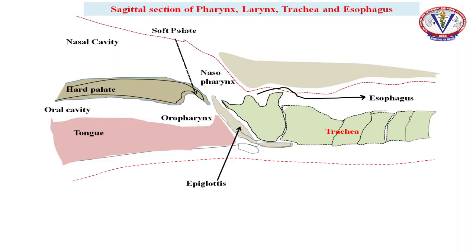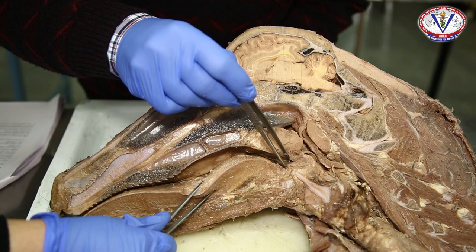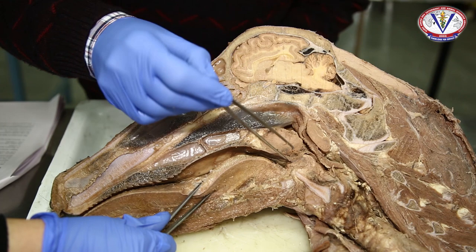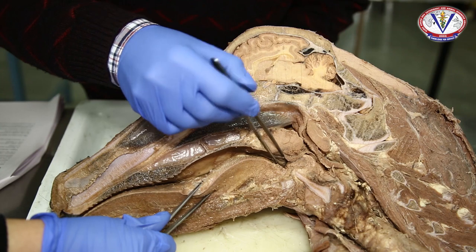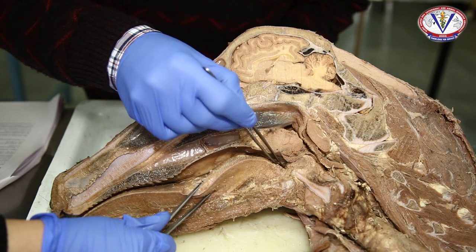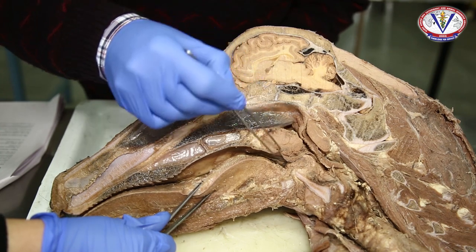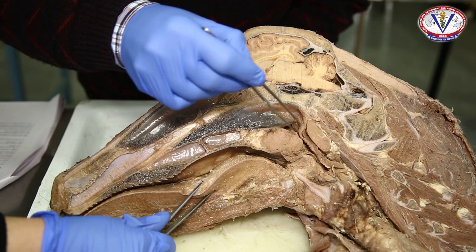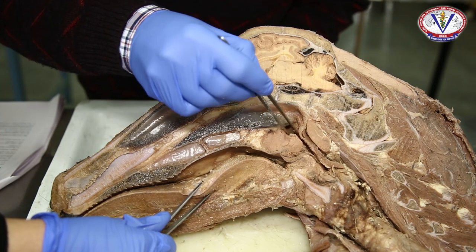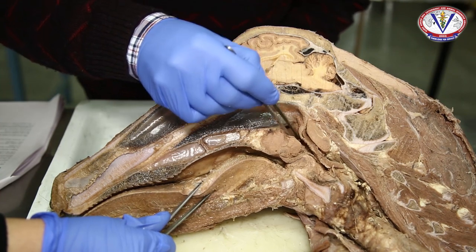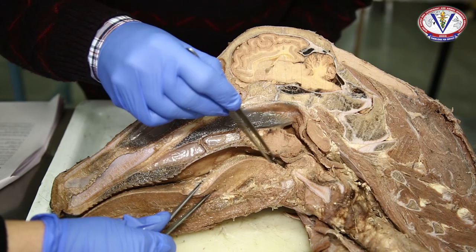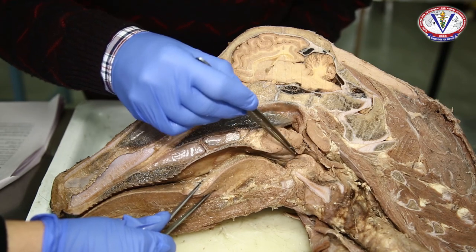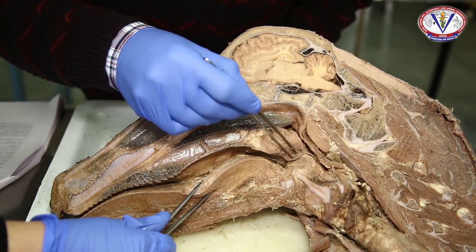The soft palate is the caudal continuation of the hard palate which extends into the pharyngeal cavity. It separates the respiratory portion of the pharynx (nasopharynx) dorsally from the digestive portion (oropharynx) ventrally. The caudal border of the soft palate reaches near the base of the epiglottis.